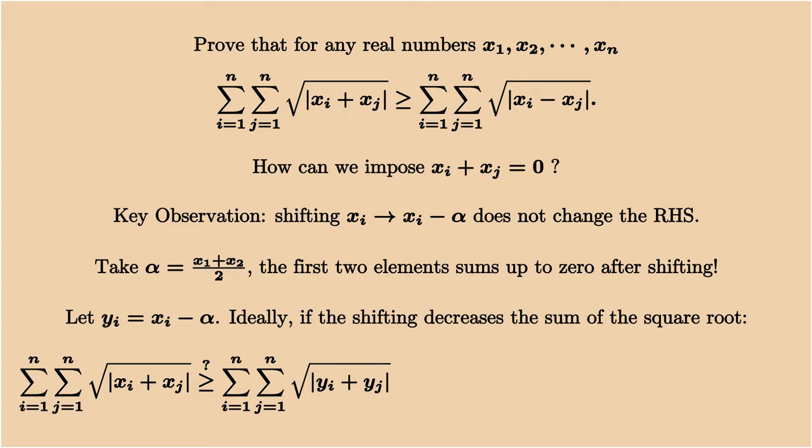Ideally, if the shifting decreases the square root of xi plus xj to yi plus yj, then we can apply the induction on yi and get what we want, because the difference between yi and yj is the same as the difference between xi and xj.